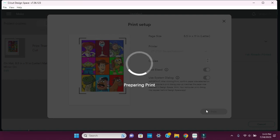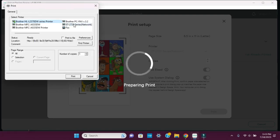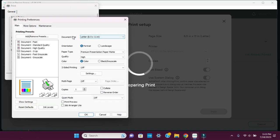Then turn Use System Dialog on and then hit Print. What that does when you select the Use System Dialog is it takes you directly to the printing preferences, and you always want to check those before you print.